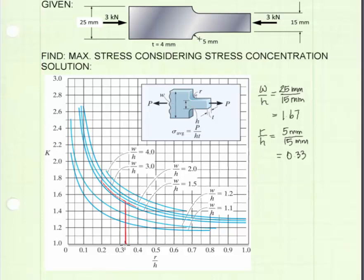We will then draw a vertical line from 0.33 up until we get to our W over H line. Then we draw a horizontal line from the intersection point to the K scale on the left side of the chart.